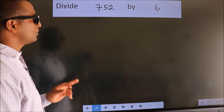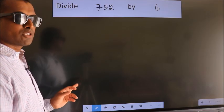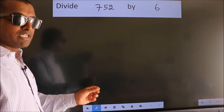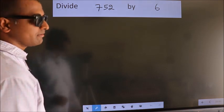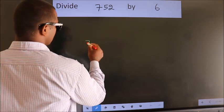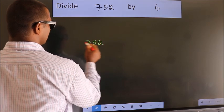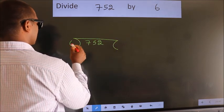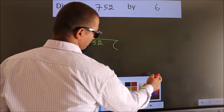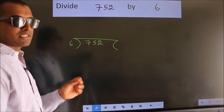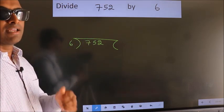Divide 752 by 6. To do this division, we should frame it in this way. 752 here, 6 here. This is your step 1. Next.